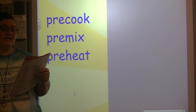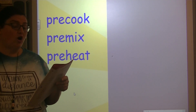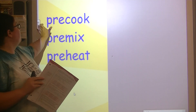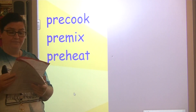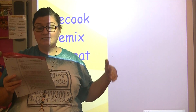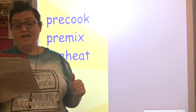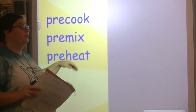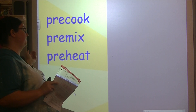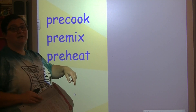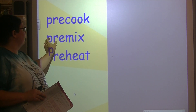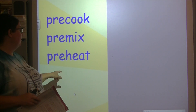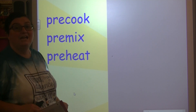The letters P-R-E are called a prefix. Prefixes are similar to suffixes, except they're always added to the beginning of the root word. In fact, 'pre' itself means before. This may help you remember where prefixes are found — prefixes are before the root word. So pre-cook means before you cook, pre-mix means before you mix, and pre-heat means before you heat it.